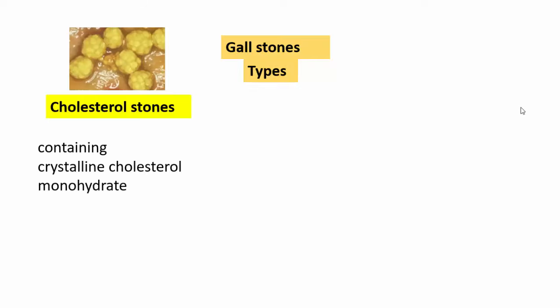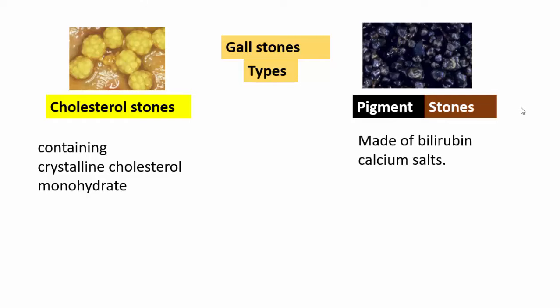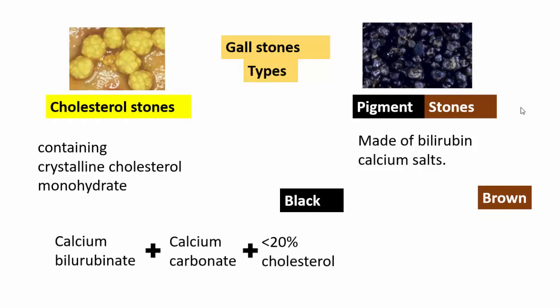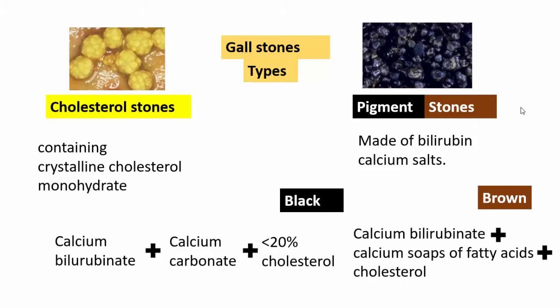Gallstones are classified into two major categories. First, cholesterol stones, which contain crystalline cholesterol monohydrate. Second, pigment stones, which contain varying components of bilirubin and calcium salts. Pigment stones are further divided into black pigment and brown pigment. Black pigment stones are composed of calcium bilirubinate, calcium carbonate, and less than 20 percent cholesterol. Brown pigment stones are composed of calcium bilirubinate and calcium soaps of fatty acids along with cholesterol. Notably, calcium carbonate is absent or in very low concentration in brown pigment stones.